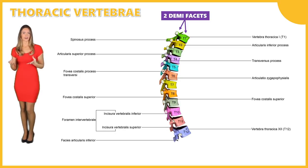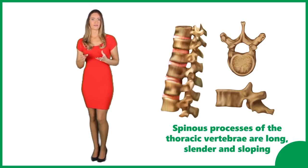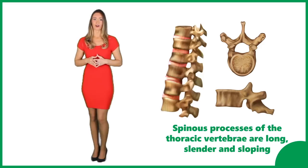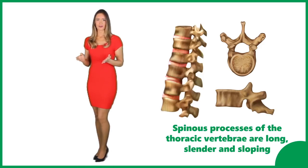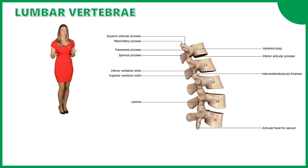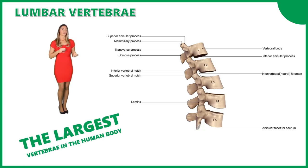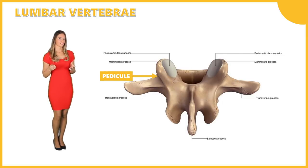Spinous processes of the thoracic vertebrae are long, slender, and sloping. The vertebral foramen of the thoracic vertebrae is circular. The five lumbar vertebrae are the largest in the human body. They connect the thoracic vertebrae and the pelvis. Lumbar vertebrae are kidney-shaped and have short and thick pedicles and laminae. Their shape and large size are specialized for supporting the torso's weight.